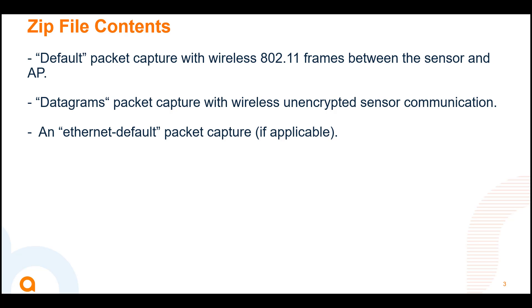The zip file contains: first, the default packet capture with wireless 802.11 frames between the sensor and the AP; second, a datagram packet capture with wireless unencrypted sensor communication; and third, an Ethernet default packet capture if applicable.